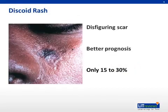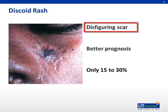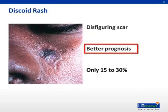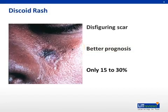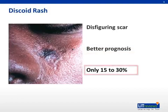Unlike the malar rash, discoid lesions tend to leave permanent scars. While discoid lesions can occur in the setting of SLE, some people can have the rash without other systemic features. Unfortunately, discoid rashes tend to have a predilection to involve the face and scalp. However, discoid rashes are only present in up to 15% to 30% of patients with lupus.